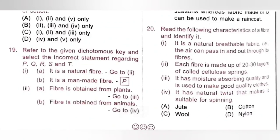Twentieth question: A fiber described as natural and breathable, made of 20 to 30 layers of coiled cellulose springs, moisture-absorbing, with natural twist suitable for spinning — this is cotton. Option B is the correct answer.